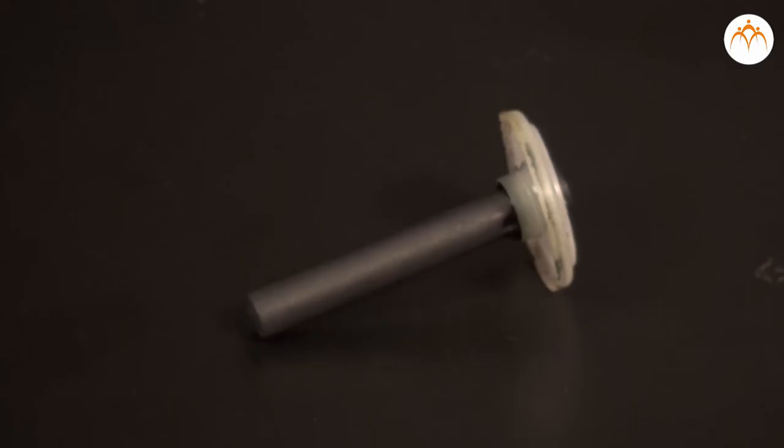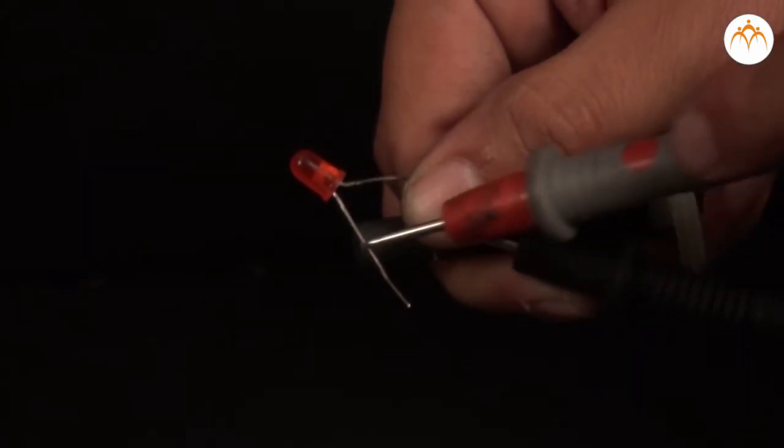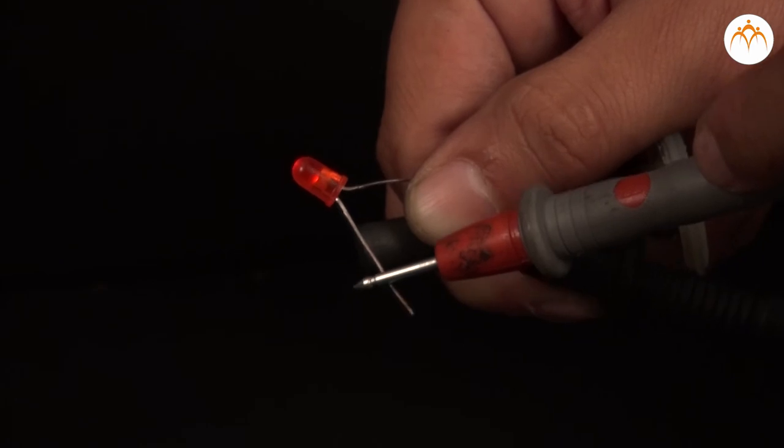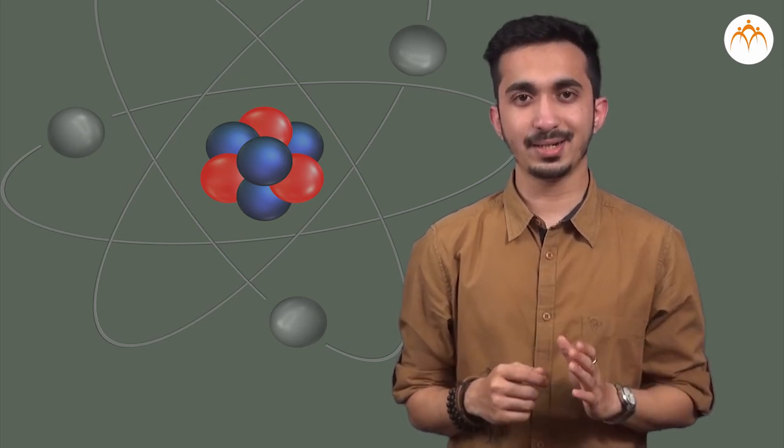Non-metals have low melting and low boiling points than metals. Non-metals are bad conductors of electricity and heat. But graphite, which is an allotrope of carbon, is an exception because graphite is a good conductor of electricity. Substances which are bad conductors of heat are usually bad conductors of electricity. But diamond is a bad conductor of electricity and a good conductor of heat.